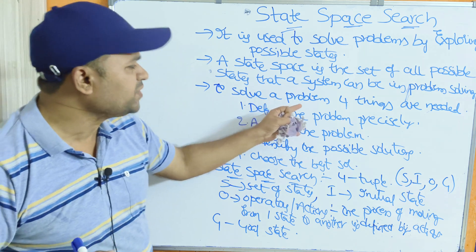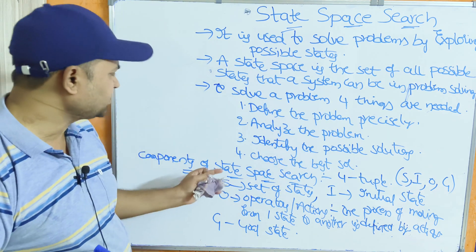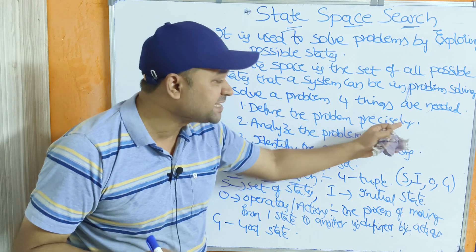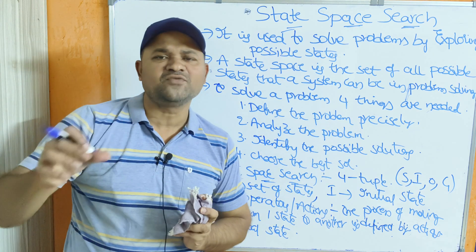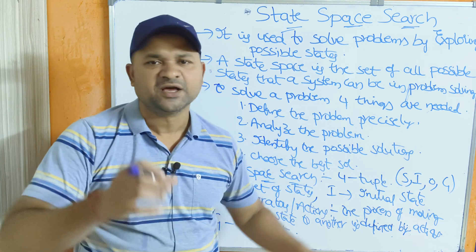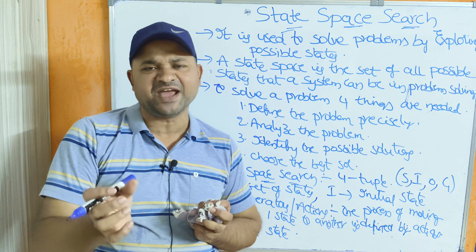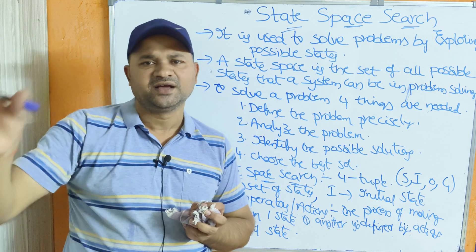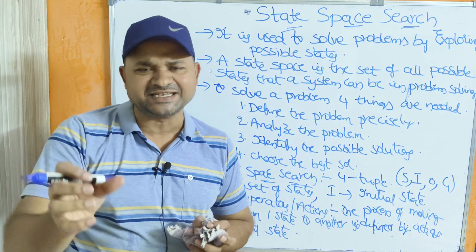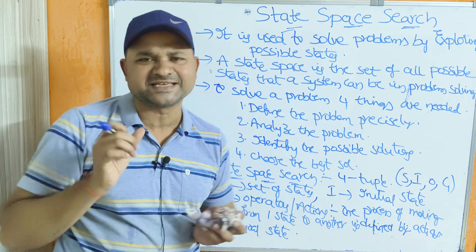To solve a problem, four things are needed. The first one is: define the problem precisely. Before solving the problem, we need to define it precisely and accurately — that means we need to define what is the initial state and what is the goal state. All those details need to be defined precisely.